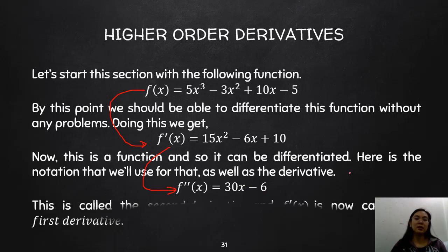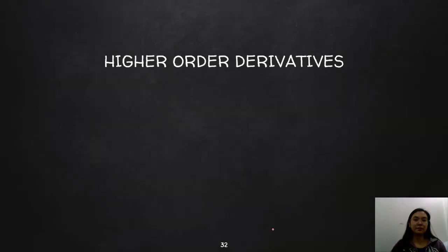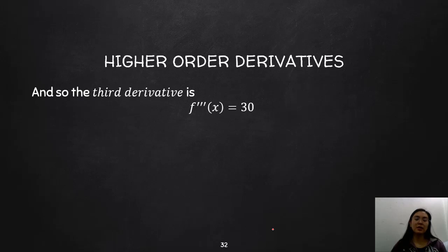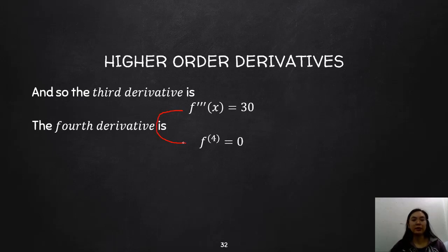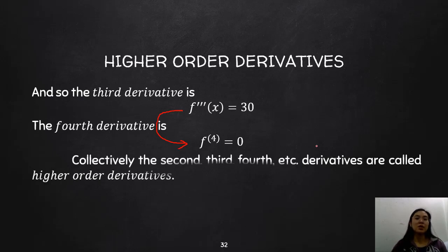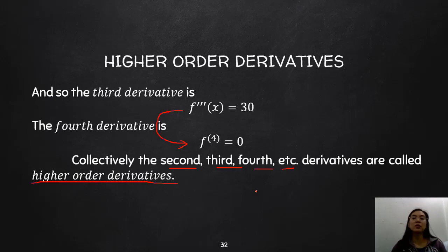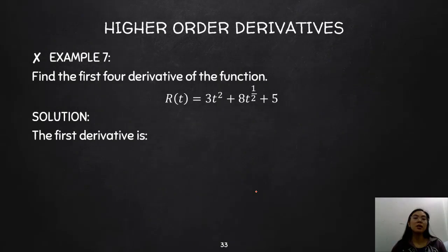The third derivative is f‴(x) = 30. And of course, you could still get the derivative of that, which is 0. Collectively, the second, third, fourth, etc. derivatives of a function are called higher order derivatives. So if you are asked to get the second, third, or fourth derivative of a function, those are your higher order derivatives.